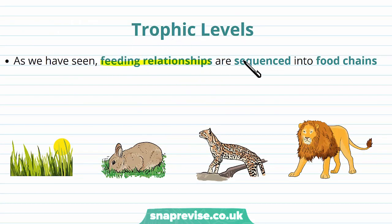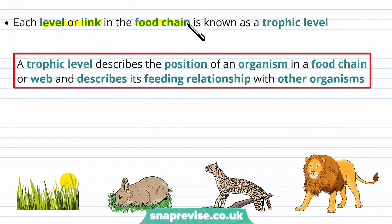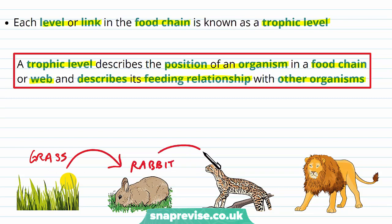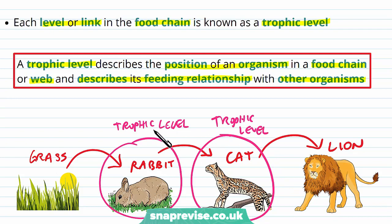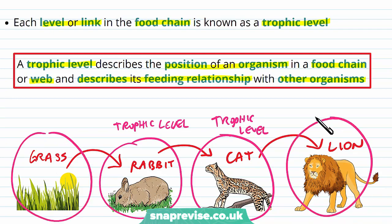The feeding relationships are sequenced into food chains or food webs, where the energy of one organism goes into the one that eats it. Each level or link in the food chain is what we call a trophic level. A trophic level describes the position of an organism in a food chain or food web, and it describes its feeding relationship with other organisms. So in the food chain — grass eaten by rabbit, rabbit eaten by cat, cat eaten by lion — each separate level is a trophic level, and every single stage in a food chain or web is one of these trophic levels.